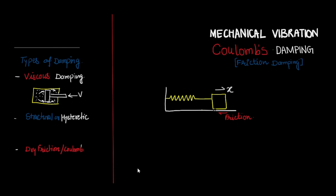What is viscous damping? Suppose we have a piston-cylinder arrangement and there is a slight gap between the piston and the cylinder wall. When we push the piston and the cylinder is filled with oil, there will be a flow of oil through this passage, creating fluid friction because of the viscosity of the fluid. This is known as viscous damping.